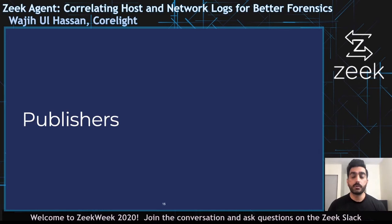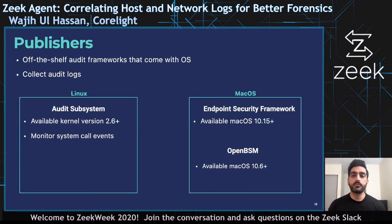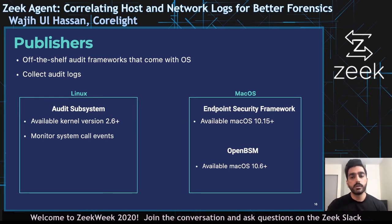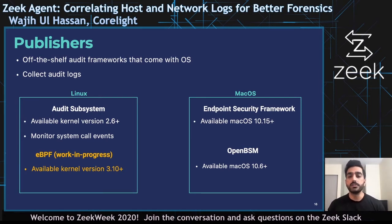Now let's see what kind of publishers Zeek Agent currently supports. The role of the publisher is to get OS events. In Zeek Agent, we use commodity off-the-shelf auditing frameworks that come with the OS as these publishers. This allows Zeek Agent to fetch OS events in a non-intrusive manner, avoiding any instrumentation or kernel modification on the end host. For Linux, we use the audit subsystem available in all kernel versions above 2.6. For macOS, we use the Endpoint Security framework and OpenBSM to collect kernel-level events. We are also looking into adding eBPF support in Zeek Agent to collect events on Linux, as eBPF is a new kernel feature that allows monitoring of kernel functions and is supposed to be more efficient than the audit subsystem.